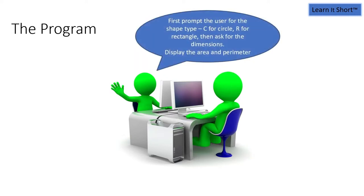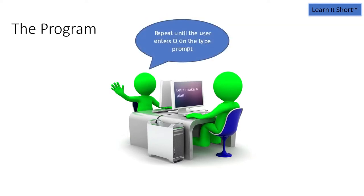When we run the program, they want it to first prompt the user for what kind of shape they want to calculate. C for circle, R for rectangle, stuff like that. And then based on what they picked, we'll prompt them for the dimensions, either the radius or the width or the height. Then we'll display the area and the perimeter or circumference in the case of a circle of the two shapes or whatever shape they chose. They also want us to do this over and over again until the user enters Q. So when we prompt them for circle or rectangle, we'll also prompt them for quit, and that's how we quit the program.